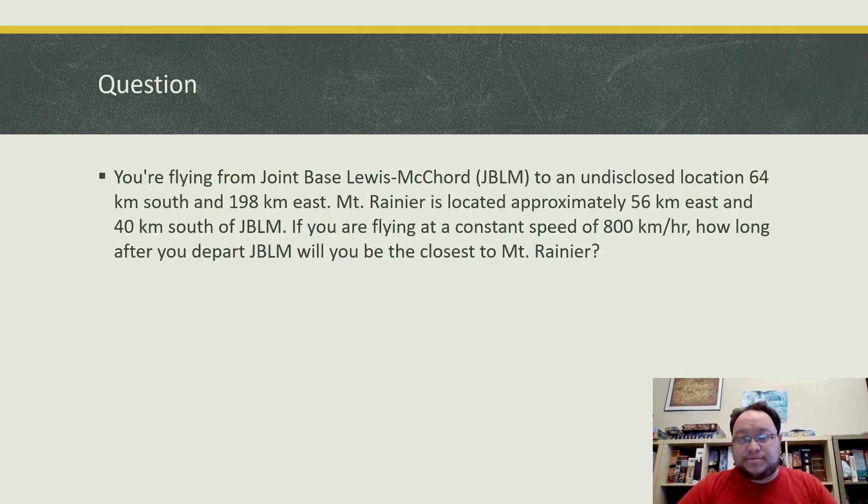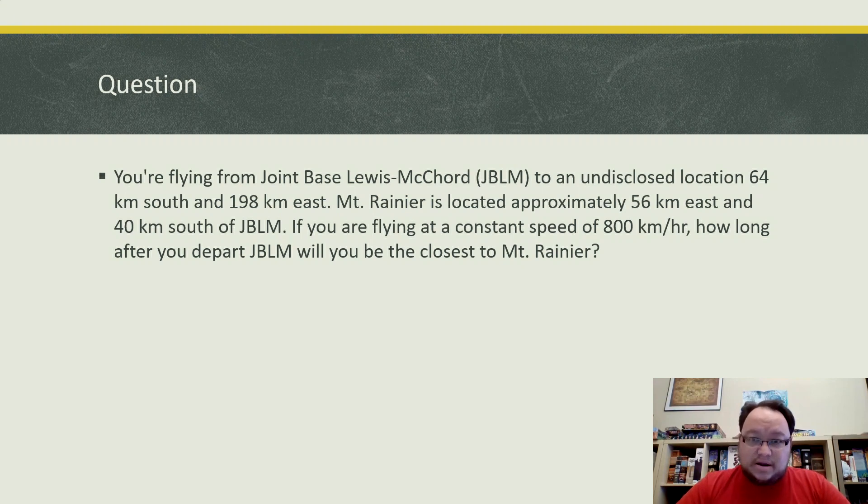The question is: you're flying from JBLM to an undisclosed location 64 kilometers south and 198 kilometers east. Mount Rainier is approximately 56 kilometers east and 40 kilometers south of JBLM where you're starting your flight. If you're flying at a constant speed of 800 kilometers an hour, how long after you depart JBLM will you be the closest to Mount Rainier?